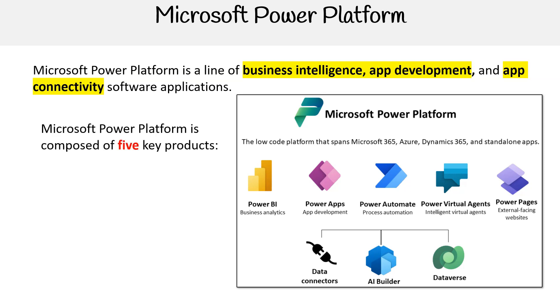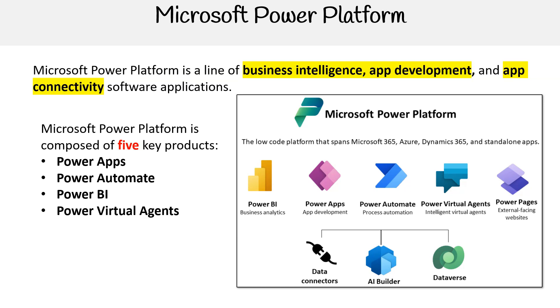Microsoft Power Platform is composed of five key products: Power Apps, Power Automate, Power BI, Power Virtual Agents, and Power Pages. We'll be going through a brief overview of each product, starting off with Power Apps.